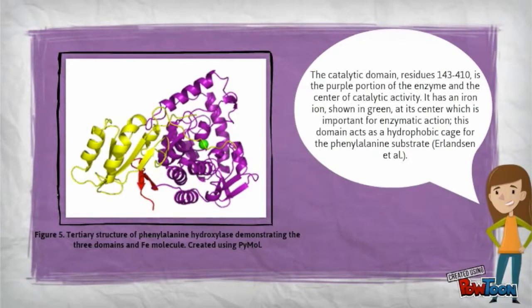The catalytic domain, residues 143 through 410, is the purple portion of the enzyme and the center of catalytic activity. It has an iron ion, shown in green, at its center, which is important for enzymatic action. This domain acts as a hydrophobic cage for the phenylalanine substrate.